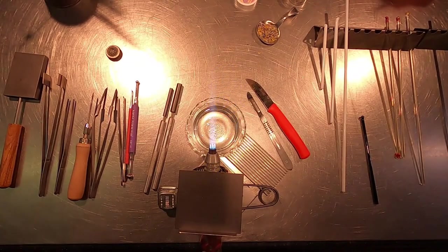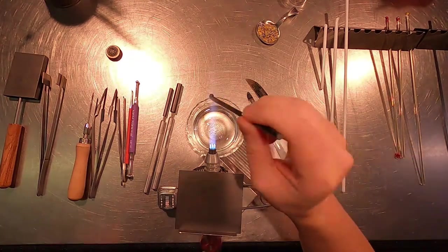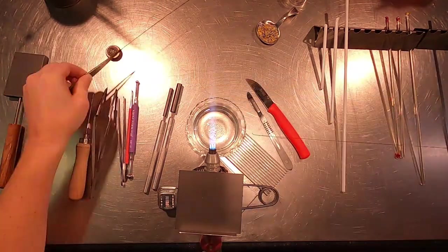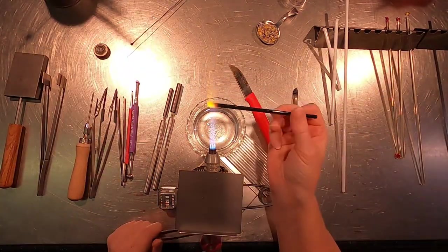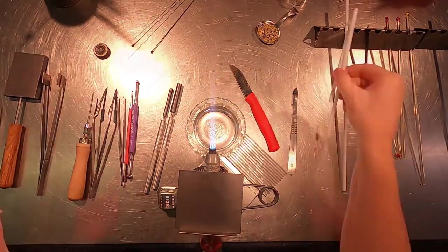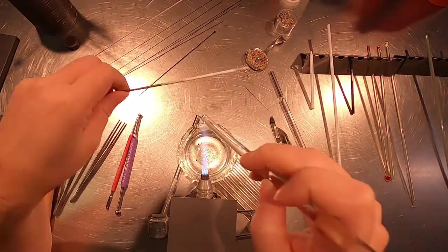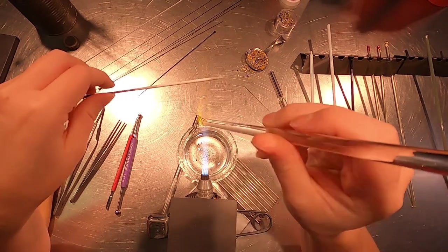So attempt number two, here we go. As prep, I pulled several very thin deep black stringers for line work and a thicker black stringer for dots. The thinner a stringer is, the harder it is to work with, as it tends to want to snap or ball up or burn away before it attaches to the surface of the bead.